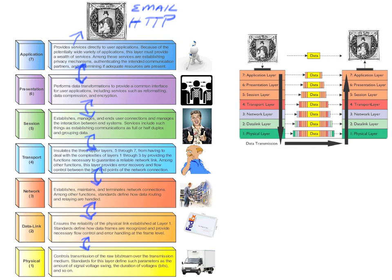At layer six, we have the presentation layer — the translator. Logically, not physically, it converts from one format to another. For example, from ASCII to EBCDIC, which is an old IBM way of representing data. Compression of files to make them smaller happens here at layer six, and encryption or decryption also happens logically at layer six. Think back to the king story as traffic goes down this stack.